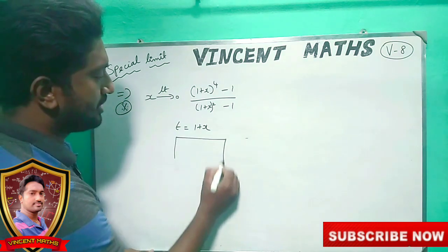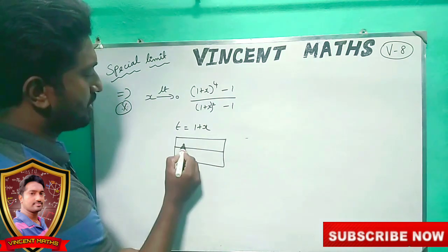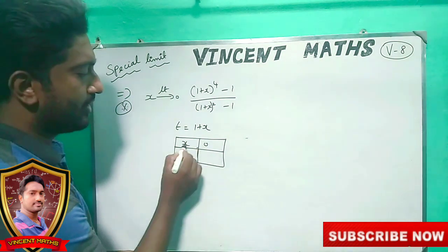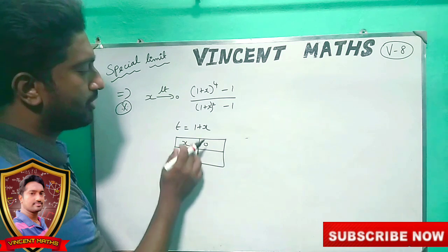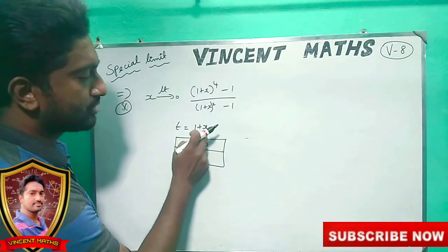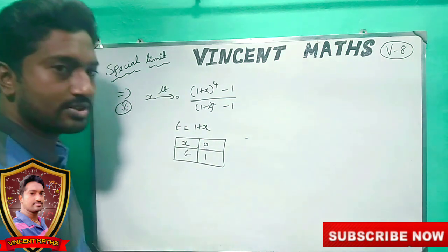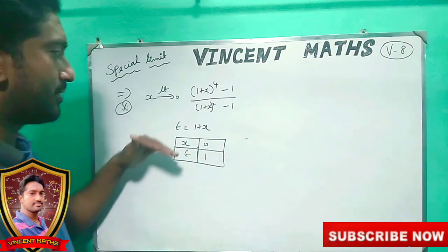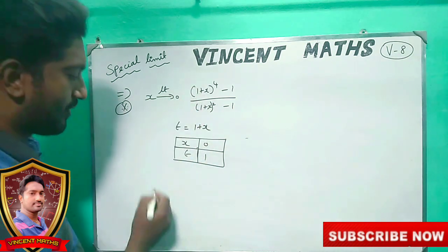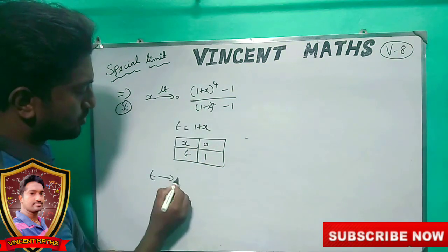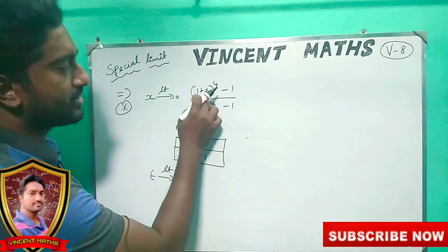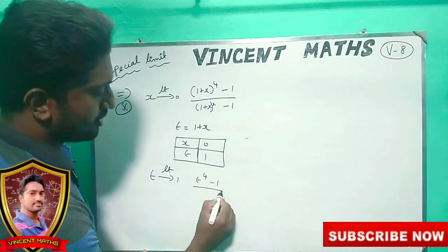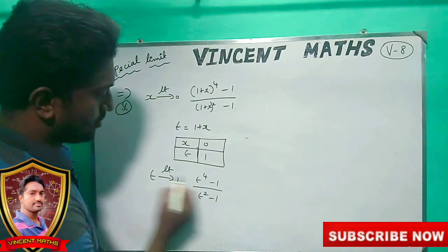Now, what do we do to t? The limit is x goes to 0. If x equals 0, x goes to 0. What do you want to do? If x goes to 0, the value is 1. Given that, the limit is given to 1. T goes to 1. So, 1 plus x gives us t power 4 minus 1 divided by t squared minus 1.